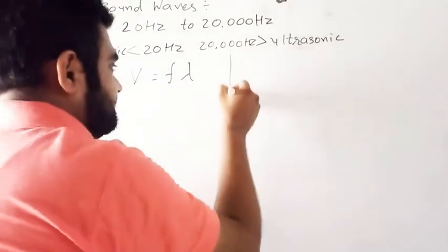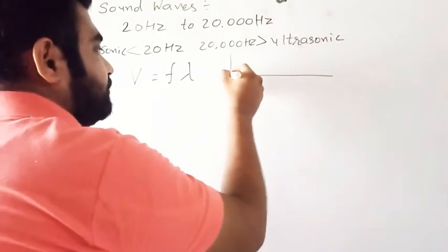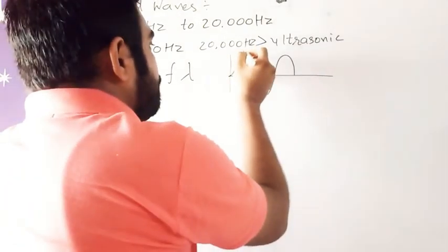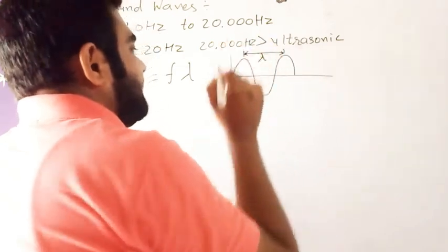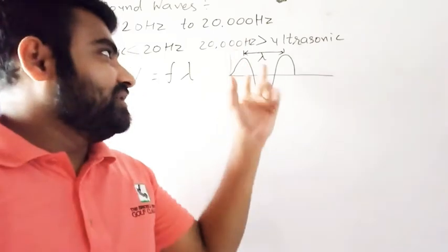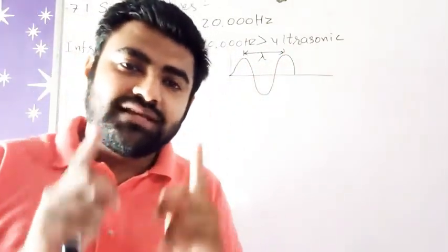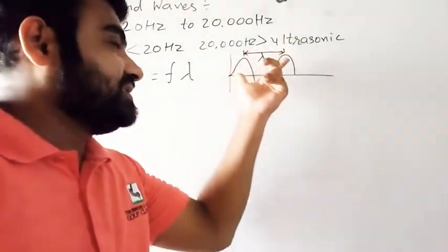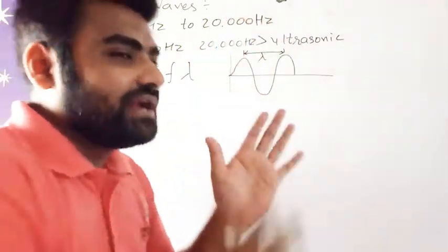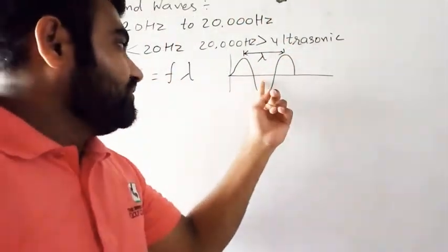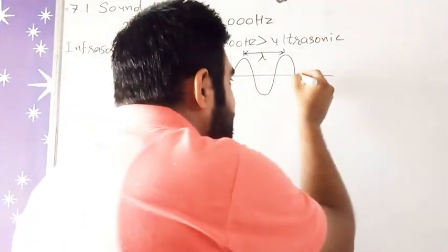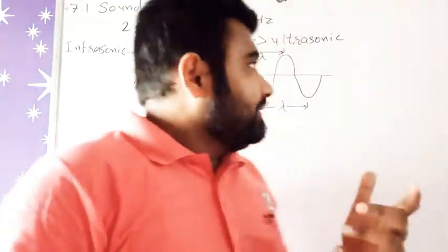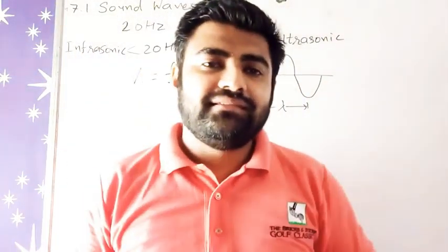For example, with a transverse wave oscillating like this — the length between two consecutive crests is called lambda, our wavelength. Similarly, the distance between two consecutive troughs is also the wavelength. Since wavelength is a type of length, its unit is in meters.